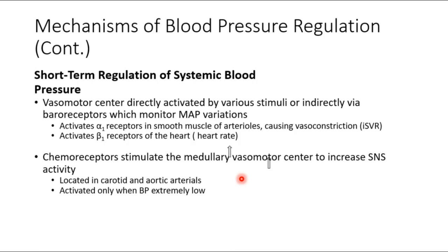It might seem like a bad plan to entirely block the mechanism that raises blood pressure, but there are other controls of fluid homeostasis. What about beta blockers? We're blocking beta-1 receptors — receptors for norepinephrine in the heart. Blocking them means norepinephrine cannot bind, so you cannot increase heart rate or contractility, and blood pressure is managed by reducing cardiac output.